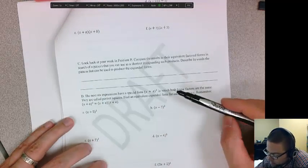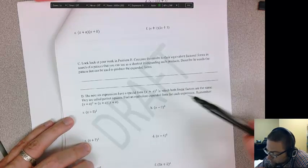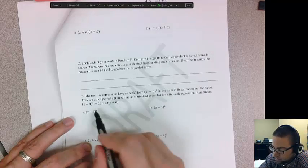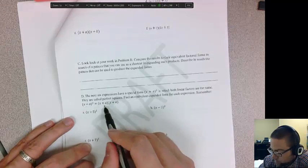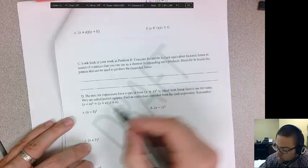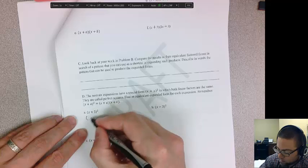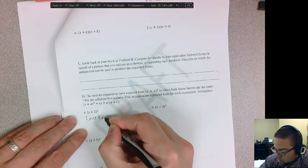Now we're going to look at perfect squares. So this whole thing is multiplying times itself. That's what squared means. So x plus a times x plus a is what that is. So you can expand it out and then do the same thing. Multiply. So this is x plus 5 times x plus 5.